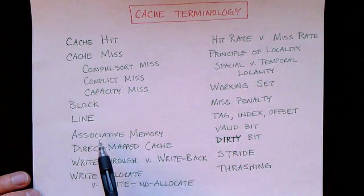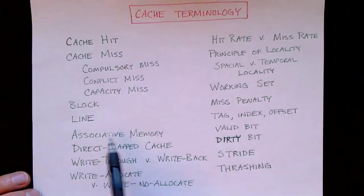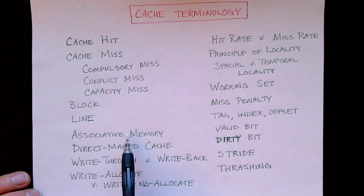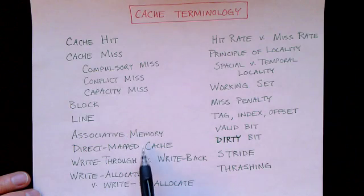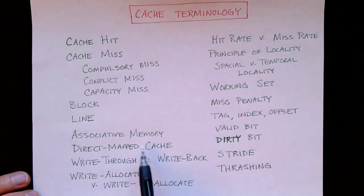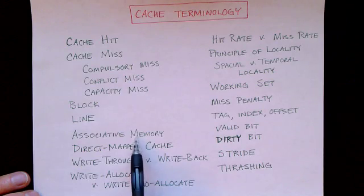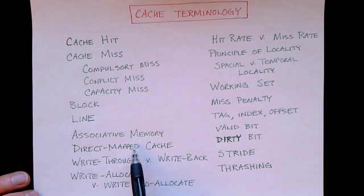We talked about associative memories in general and saw how we could use an associative memory to build a fully associative cache. That was our first step at looking at caches. Then we looked at direct mapped cache, where we used some of the bits in the middle of the address to form an index and went into a normal addressable memory to find the cache line. Then we combined these two techniques — the set associative memory with the direct mapped cache — and created the kind of cache used in practice today.